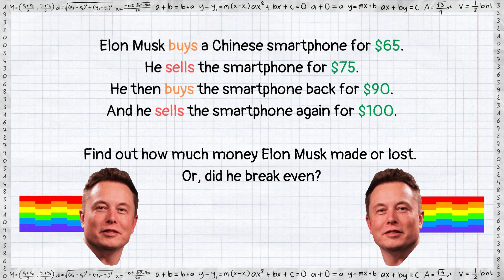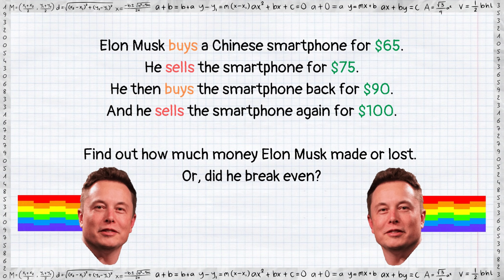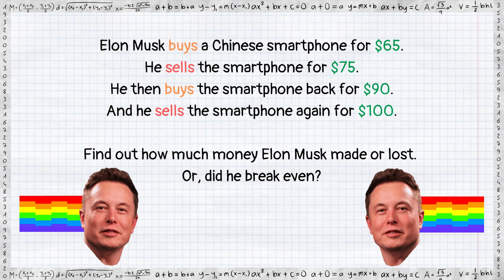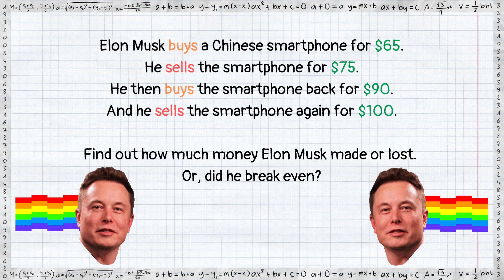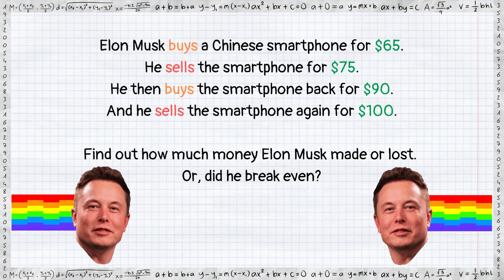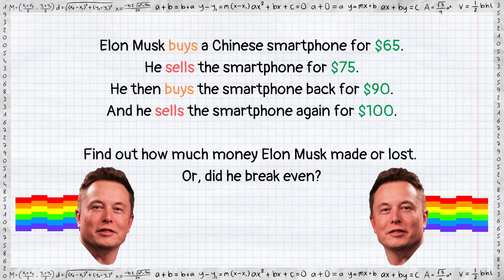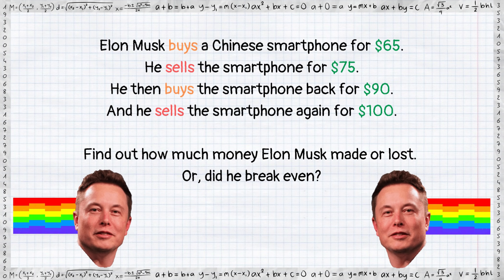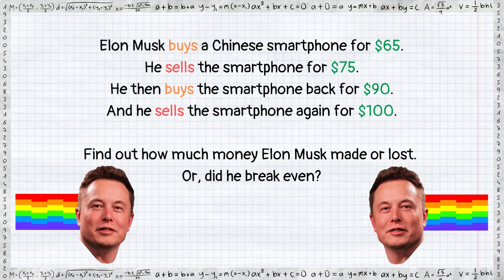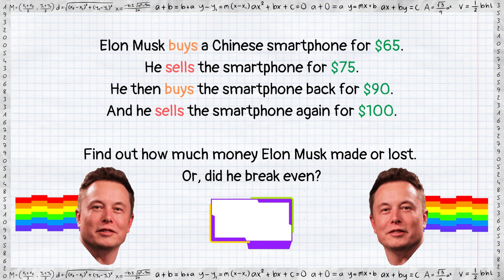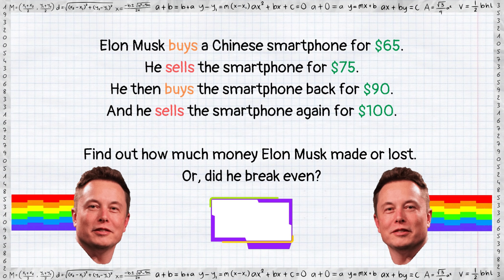Elon Musk buys a Chinese smartphone for $65. He sells the smartphone for $75. He then buys the smartphone back for $90. And he sells the smartphone again for $100. Find out how much money Elon Musk made or lost, or did he break even. I'll give you 40 seconds to find the correct answer.